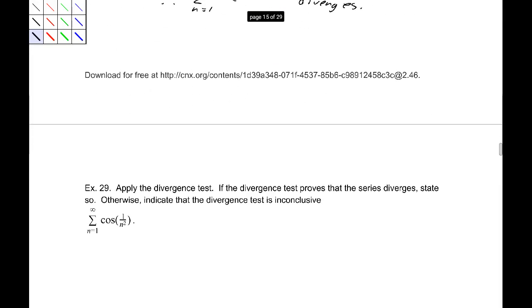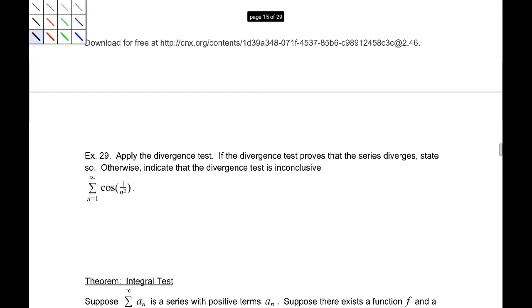Next, we have number 29, applying the divergence test to this. So, let's find the limit of cosine of 1 over n squared. Again, cosine is continuous just like the exponential function is.